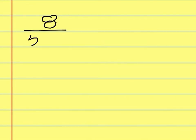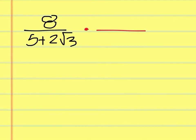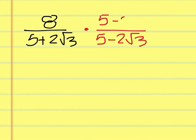This one is 8 over 5 plus 2 square root of 3. Again, you have a radical term in the denominator, so we have to multiply by the conjugate on the top and the bottom. That would be 5 minus 2 square root of 3, top and bottom.